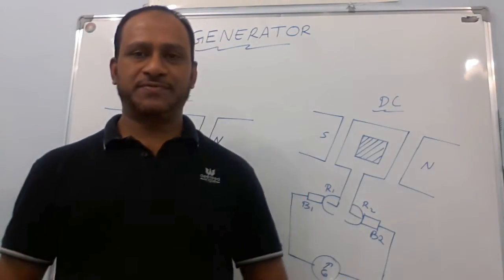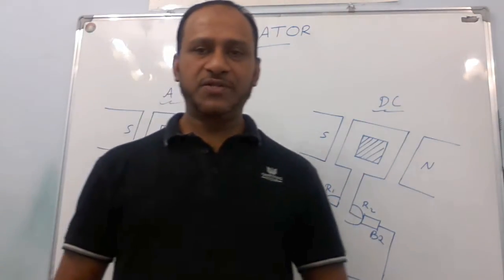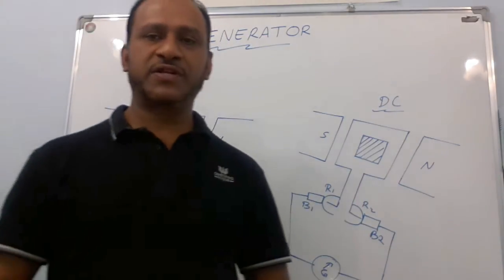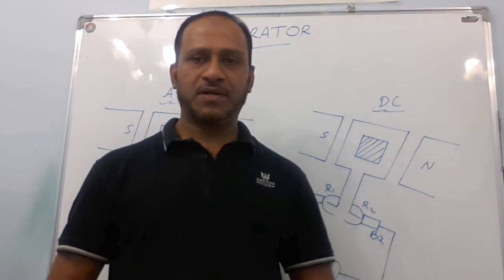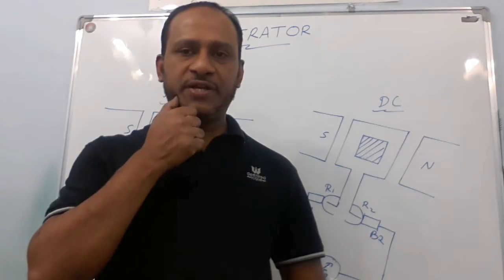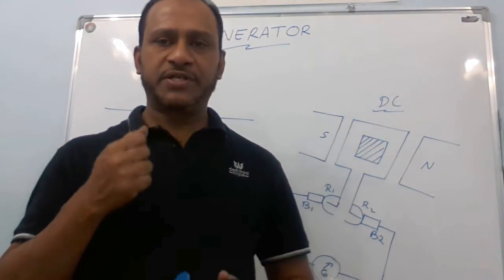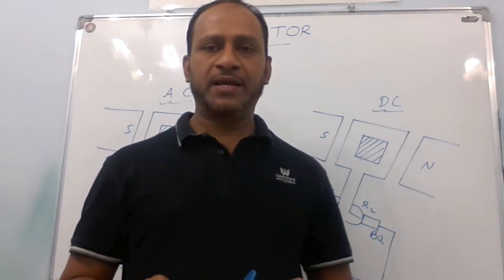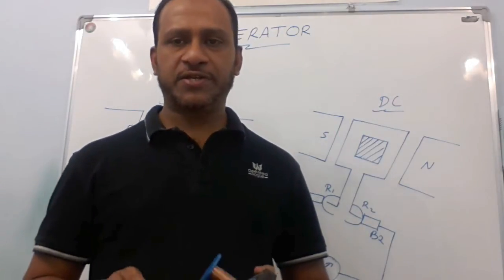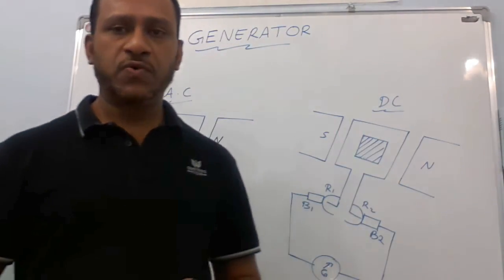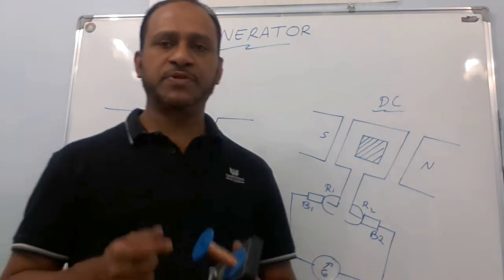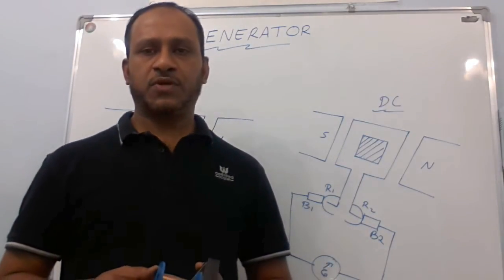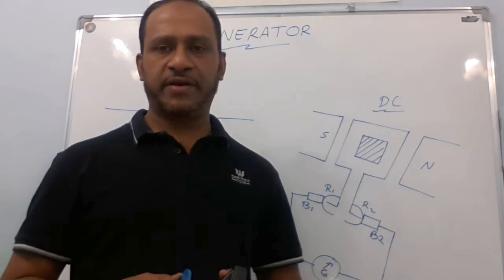Dear students, in this video I would like to explain the working of an electric generator. An electric generator is a device which is used to convert mechanical energy into electrical energy. It works according to the principle of electromagnetic induction, which was discovered by Michael Faraday.